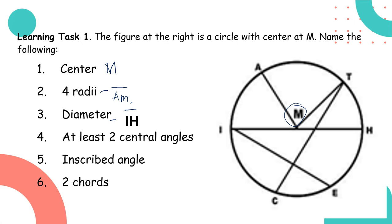At least two central angles. So let me give you one. The angle formed with the vertex at the center. So angle AMT. You can give the other two - there are three. Inscribed angle: the angle formed outside of the vertex. There it is. Can you see it? You name that one. And then two chords. So I will give you one chord: line segment TC. We have one more, so you can continue.